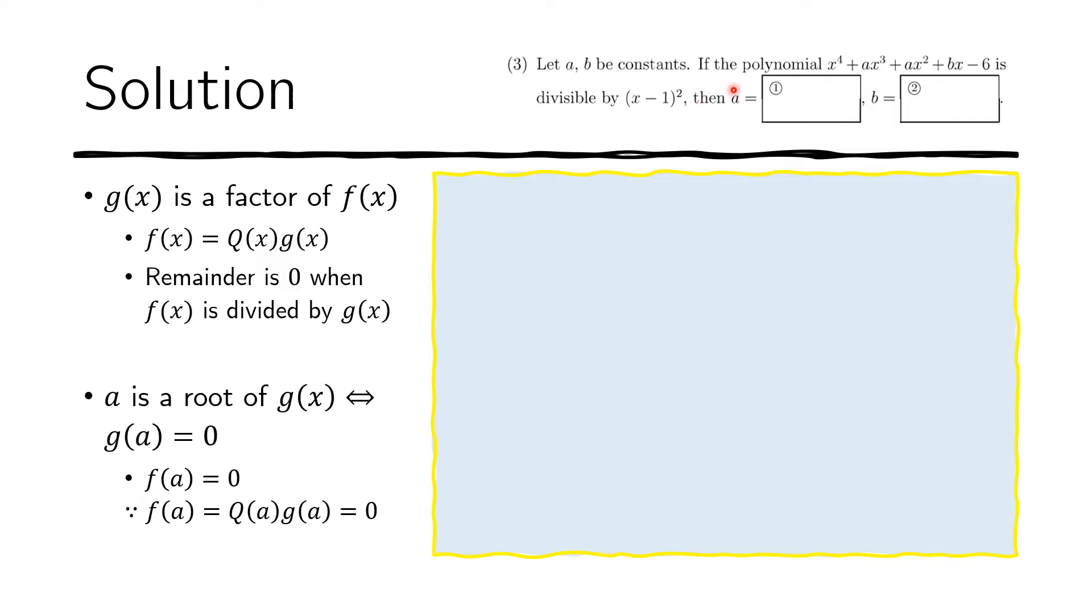For convenience, let us define some functions f of x and g of x. Let us define the given, this expression here, as our f of x. And let us define this divisor, this factor, to be g of x. And now we are asked to find A and B. Now we have two unknowns, so we require two equations to solve for A and B.